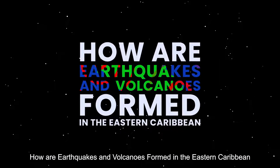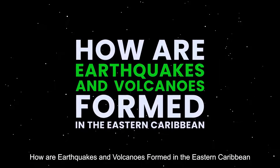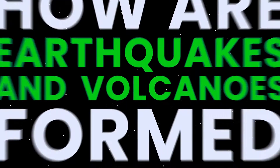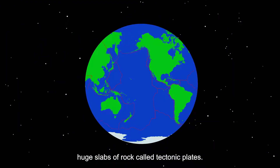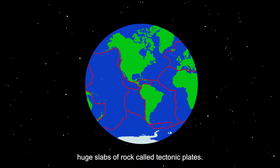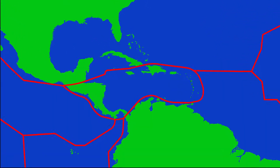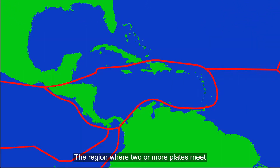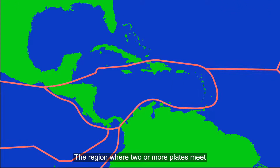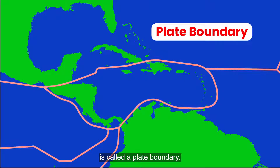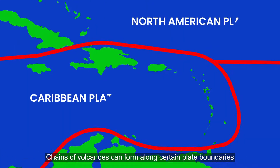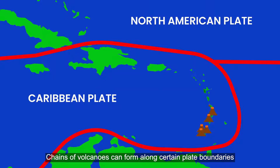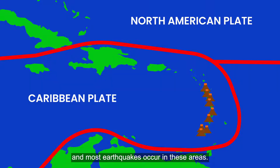How are earthquakes and volcanoes formed in the Eastern Caribbean? The Earth's crust is made up of huge slabs of rock called tectonic plates. The region where two or more plates meet is called a plate boundary. Chains of volcanoes can form along certain plate boundaries, and most earthquakes occur in these areas.